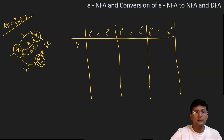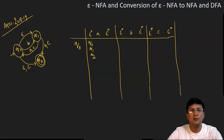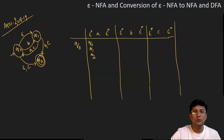q0 is the state for which I will show the transition first. Epsilon closure of q0 means all those states to which I can reach by only taking the symbol epsilon. That will contain q0 obviously, because a state can move to itself by taking epsilon. From the diagram it is clear that q0 can move to q1 and also to q2 by only taking epsilon. So the epsilon closure of q0 is {q0, q1, q2}.